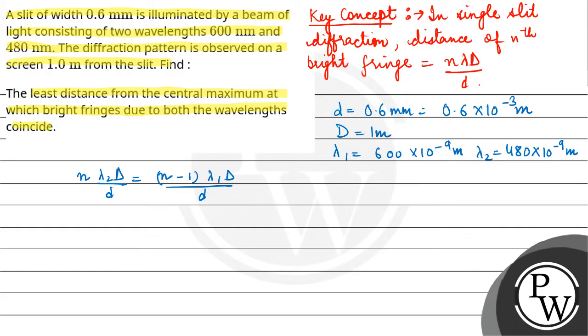Now this would be equal to n upon n minus 1 equals lambda 1 upon lambda 2, which is 600 upon 480. So this comes out to be 10 by 8, that is 5 by 4.